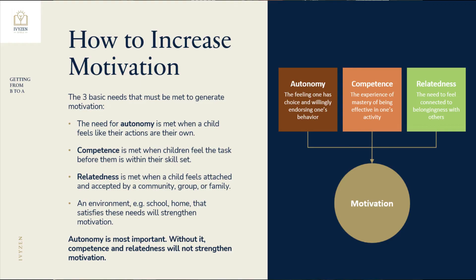Imagine your student getting good grades and doing everything he needs to do without one word from you. The three parts are: autonomy — the feeling that the student has a choice and is studying because he wants to; competence — mastery or being good at something; and relatedness — the need to belong to someone or a group. They should feel supported by their teacher, peers, and family. When all three are present, motivation will naturally emerge.